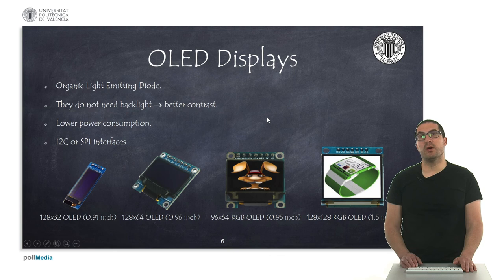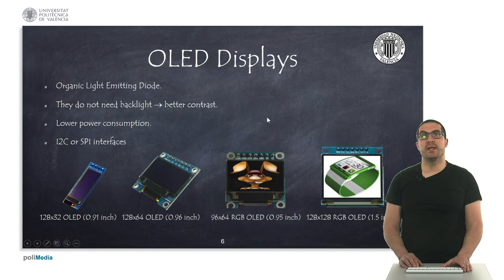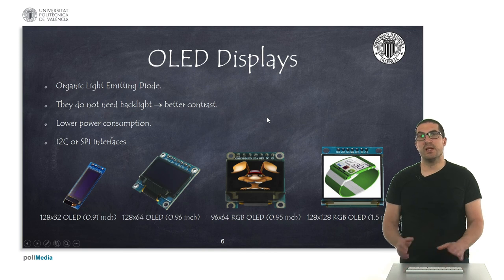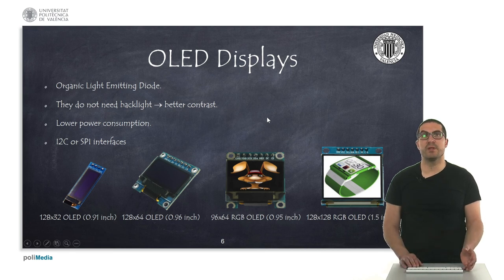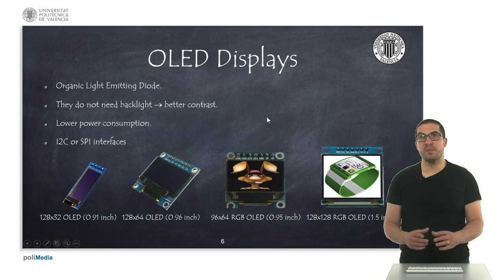It's quite common nowadays to use OLED displays. They are quite cheap and are based on organic LEDs, which allow us to specifically address each of the LEDs. One of the main advantages is that they do not require a backlight, so they have better contrast and very low power consumption. These displays are usually provided in two versions with either I2C or SPI interfaces, and here you can see different kinds of OLED displays in various sizes and resolutions.